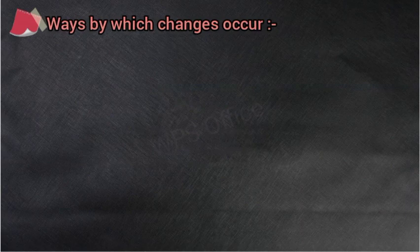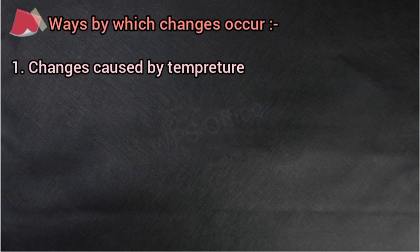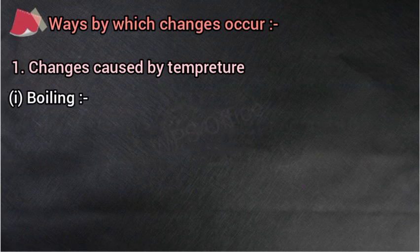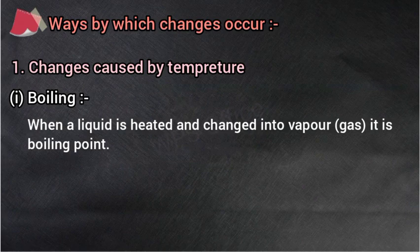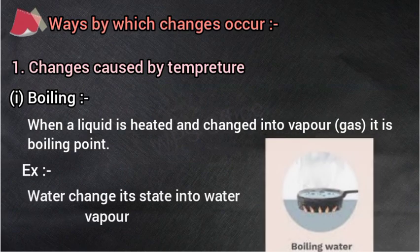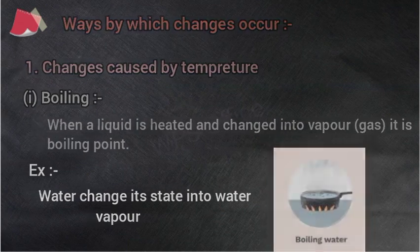And the next — ways by which changes occur. वे तरीके जिनके द्वारा परिवर्तन होता है. They are changes caused by temperature — तापमान के कारण होने वाले परिवर्तन. Boiling — when a liquid is heated and changed into vapor, it is boiling. जब किसी द्रव पदार्थ को गर्म किया जाता है, तो वो liquid से vapor में बदल जाता है, इस स्थिति को boiling point भी कहते हैं. For example: water changes its state into water vapor — जब पानी को गर्म करते हैं, तो यह water vapor यानि जलवाष्प में बदल जाता है.